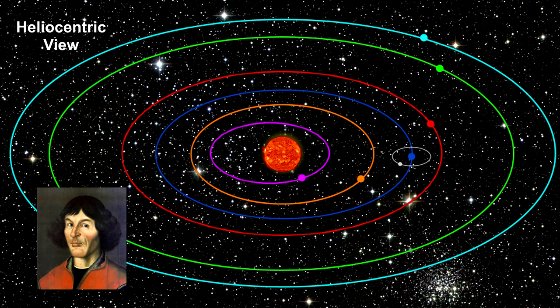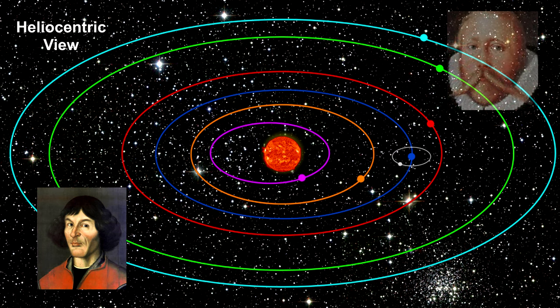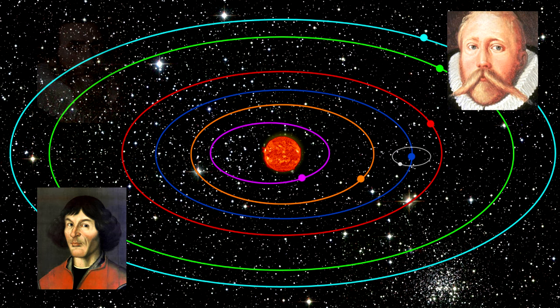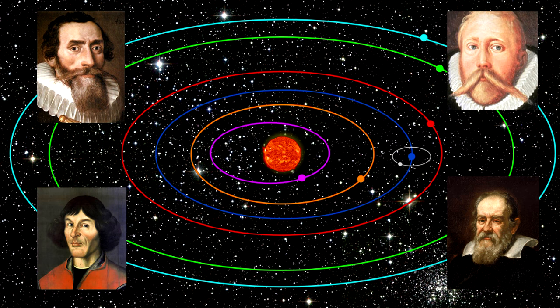Copernicus's idea didn't really start to take hold until the early 17th century, when considerable evidence for the Copernican model was compiled by the likes of Tycho Brahe, Johannes Kepler, and Galileo Galilei.